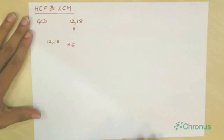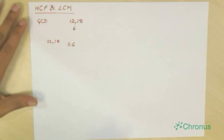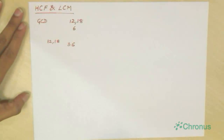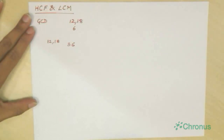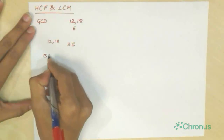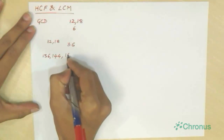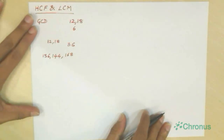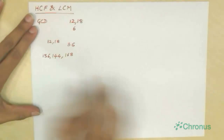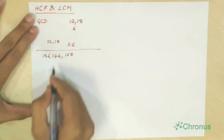Given a set of numbers, how do we calculate the HCF and LCM? There are various ways, but I prefer factorization. Let's say we have the numbers 136, 144, and 168. To find HCF or LCM, we first prime factorize all these numbers.